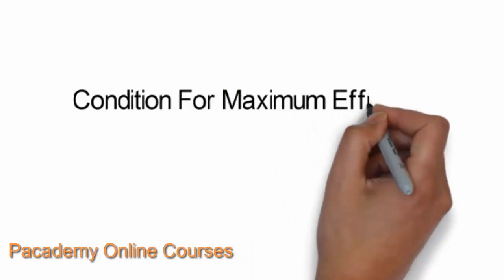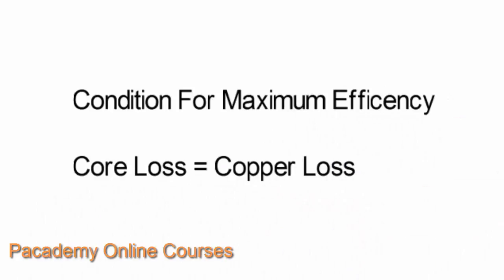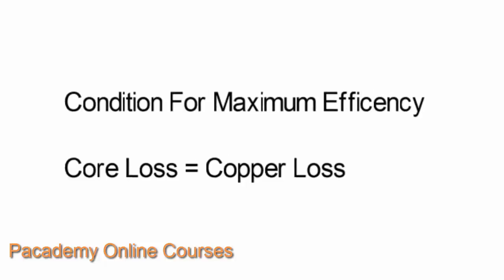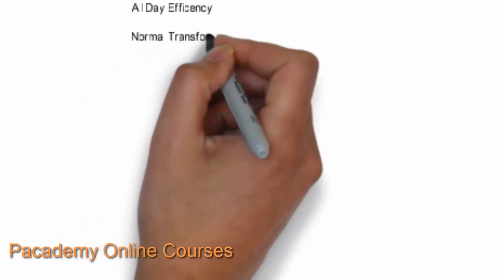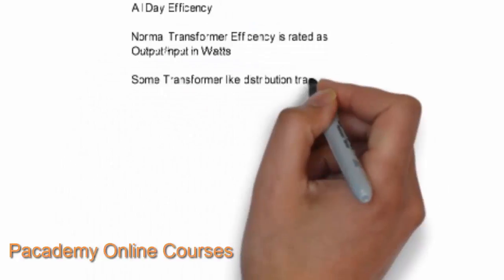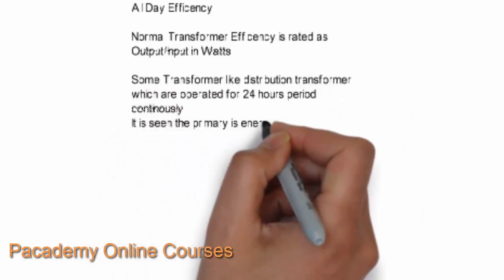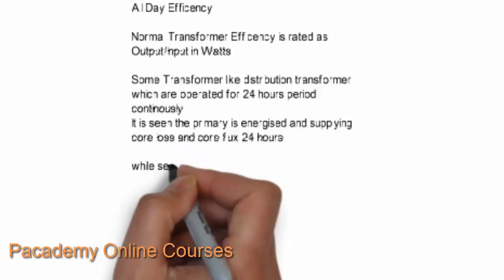The condition for maximum efficiency of a transformer is core loss equal to copper loss. The magnetic losses usually happen in the primary part of the transformer and are used to set up the flux. When this loss is equal to the copper loss happening in the secondary part, the transformer will have maximum efficiency.